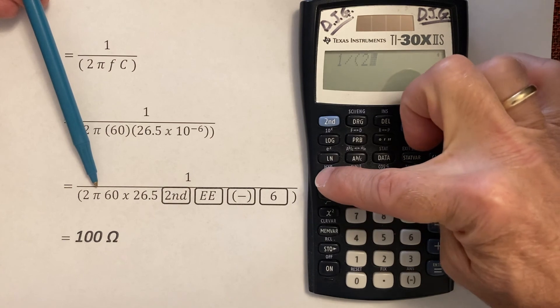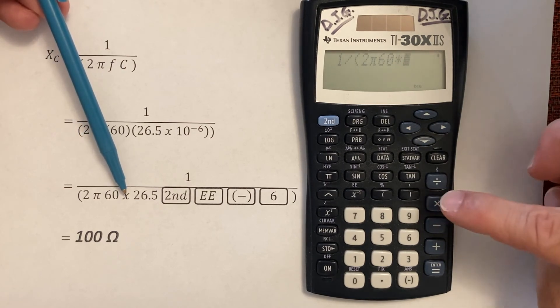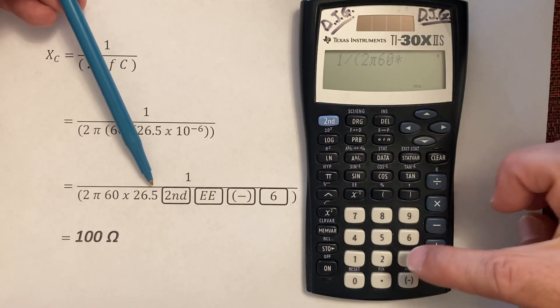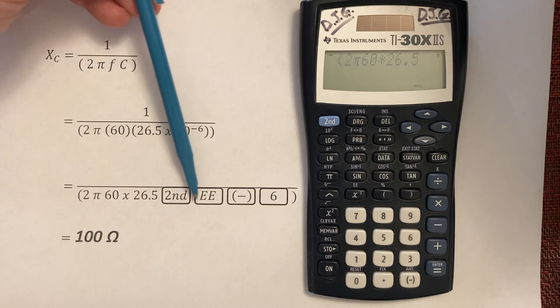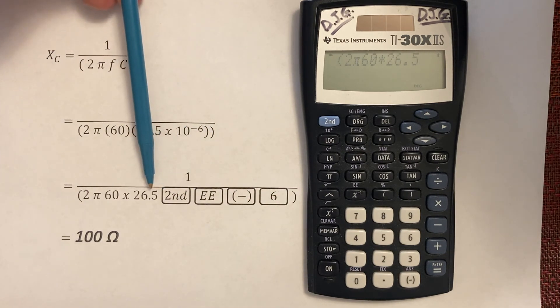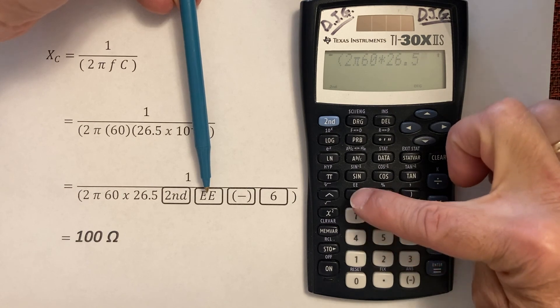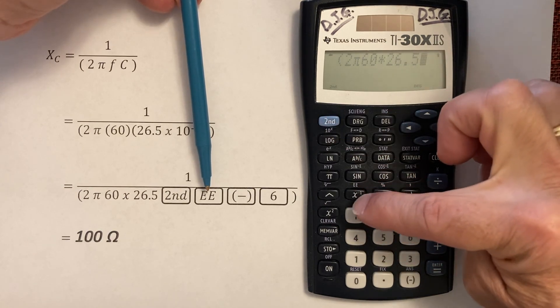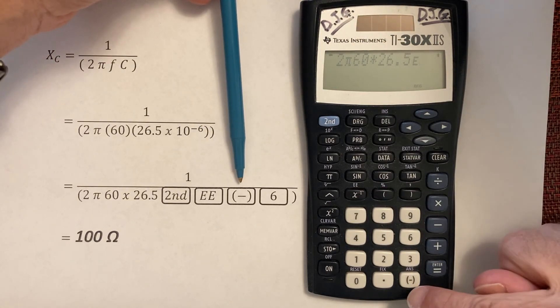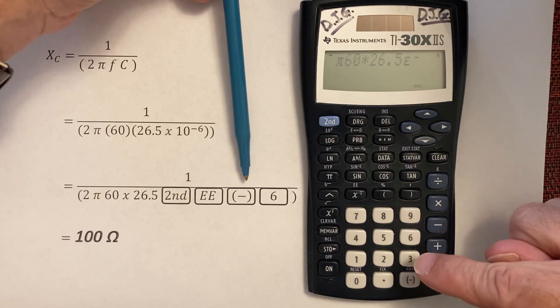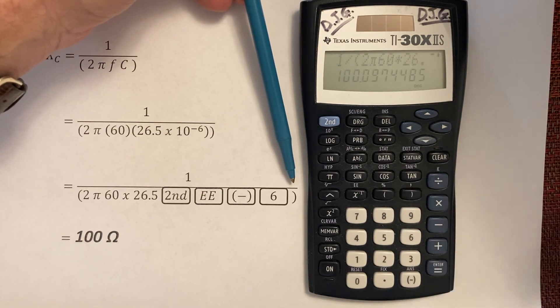Let's enter it right here: one divided by, open the parentheses, 2π, 60, that's my frequency, times 26.5. And then these four buttons will be how we basically push the decimal point over six places. So second function double E, remember right above the seven, since we have second function pressed, it's that little blue letters double E, and only one E prints out there, that's correct. Then this negative sign, the one here with the parentheses, and then 6, close parentheses if we want to, and hit equals.